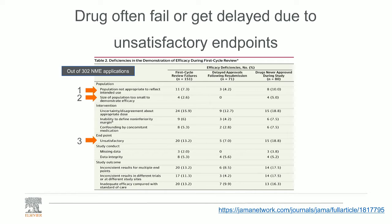Unsatisfactory endpoints means that not the appropriate endpoints were selected or evaluated in that clinical trial. Looking at the right-hand column — drugs never approved during studies — out of the 151 that went into first-cycle review failure, 80 of those were never approved. Of those 80, 15 had unsatisfactory endpoints, suggesting that inadequate endpoints are a very common cause for clinical trial failure.